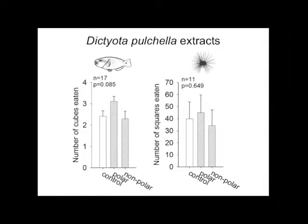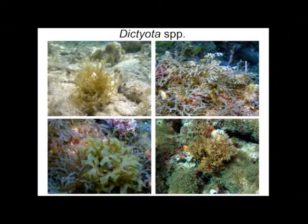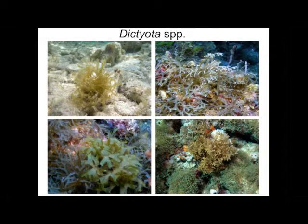Dictyota species cover a lot of the benthos now on Caribbean reefs. On Florida reefs they often have lower biomass but are still one of the dominant benthic covers. They're virtually ubiquitously chemically rich, but some of the compounds appear to be very effective chemical defenses and some don't. We can even use some of that information to explain the distribution of these algae on the reef.